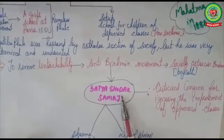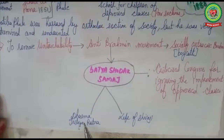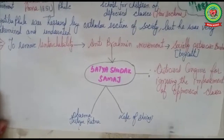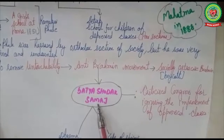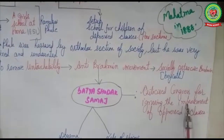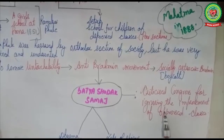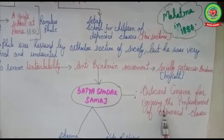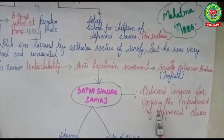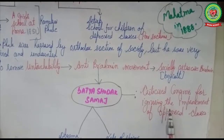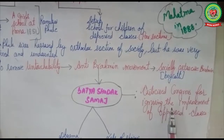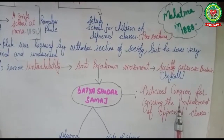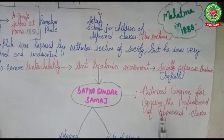To popularize his Satya Shodak Samaj, Mahatma Jyotiba Phule published two journals: one was 'Dharmat Tritya Ratna' and the second was 'Life of Shivaji.' Through his Satya Shodak Samaj, he criticized Congress for ignoring the improvement of the oppressed class. Congress at that time was in its early years and was dominated by upper caste, English-educated people, so there was no place for the lower caste people.